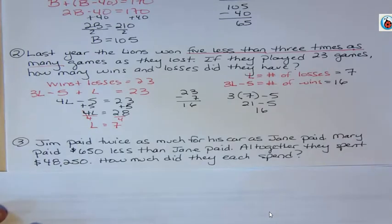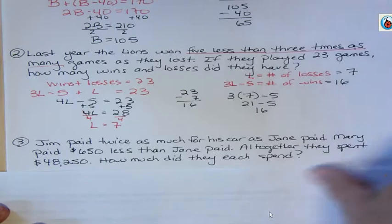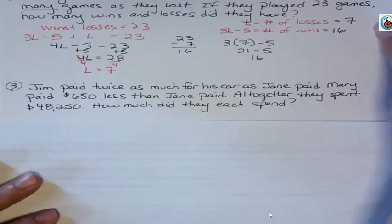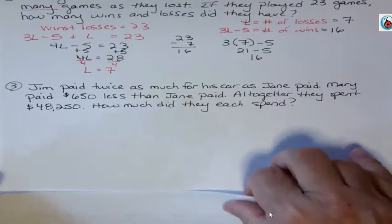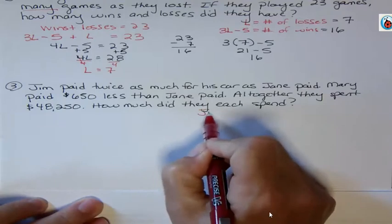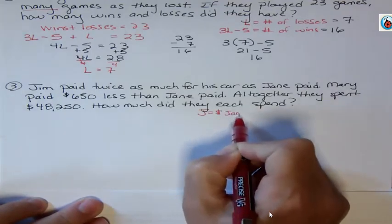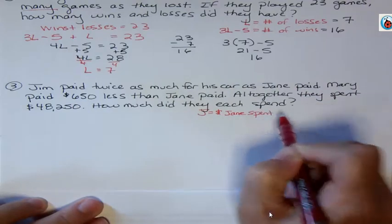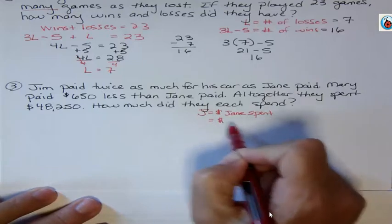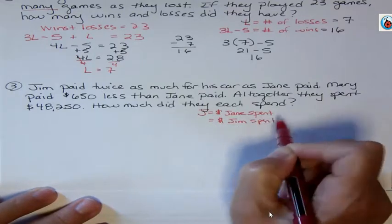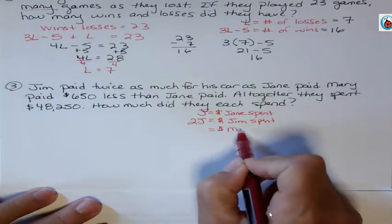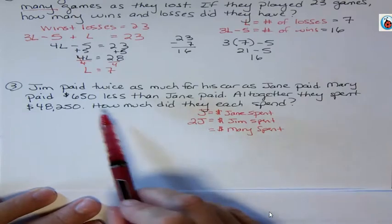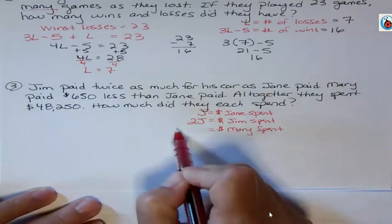One more. Jim paid twice as much for his car as Jane paid. Mary paid $650 less than Jane paid. All together they spent $48,250. How much did they spend? I want to describe three things. Here I had two things, now I've got three, but the process is the same. What is my base variable? Well, everybody's based on Jane. So Jane is my base variable. I'm going to say J equals the dollars that Jane spent. I've got to be careful here because J could also be Jim, but I'm saying that J is going to equal what Jane spent. Now I want to show the dollars that Jim spent. Well, he spent twice as much. What would twice as much look like? It would look like 2J. And Mary spent $650 less than Jane, so we take Jane and subtract 650.